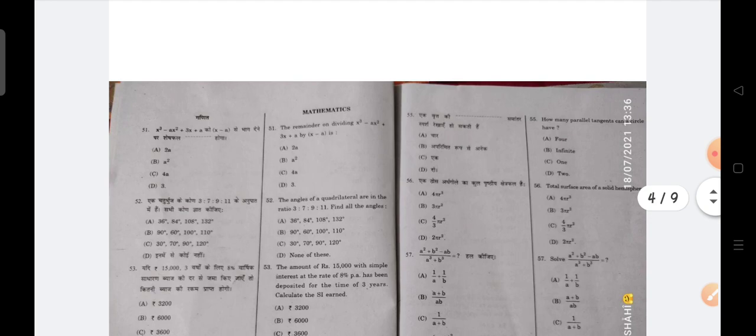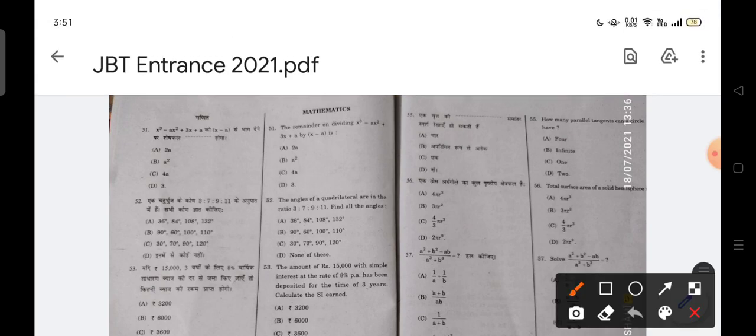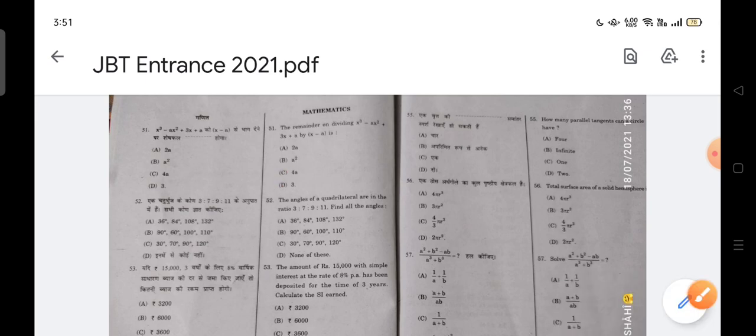The first question is the remainder on dividing 3x cube minus ax square plus 3x plus a by x minus a. So this will be the remainder. When you solve it all, this remainder will be the remainder. So that is the correct answer.